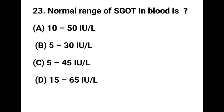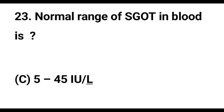Question number 23. Normal range of SGOT in blood: Option A - 10-50 IU per litre, Option B - 5-30 IU per litre, Option C - 5-45 IU per litre, Option D - 15-65 IU per litre. The correct answer is the normal range of SGOT.